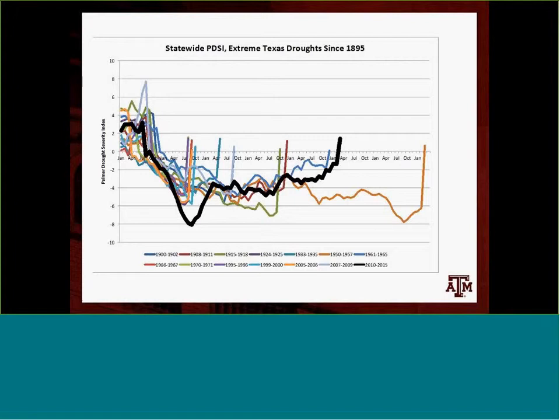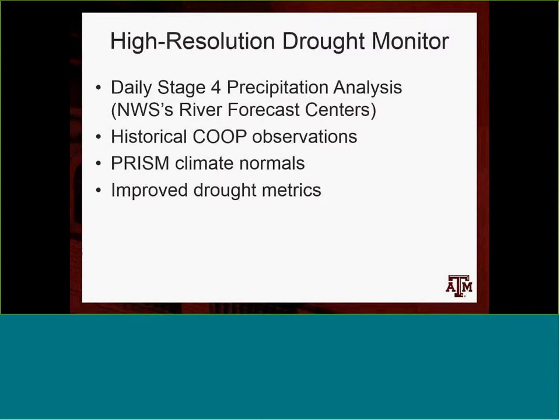What we want to do is get down to as fine a scale as possible with drought monitoring, and there are four ingredients to this. First, the Stage IV precipitation analyses that the river forecast centers produce, which gives us precipitation. You can do percent of normal, but you don't really know how unusual a particular percent of normal is, so you need to make a drought index out of that. You can do that using historical observations over a long enough time period to get the basic PDF or the statistical parameters that describe the PDF, but those are at point locations.